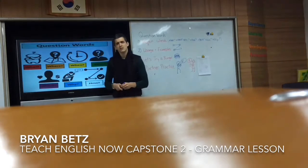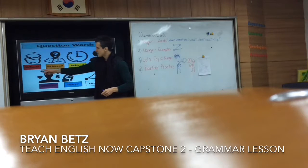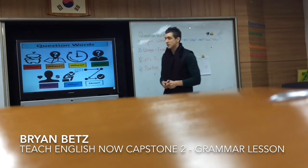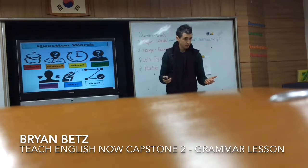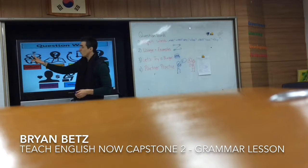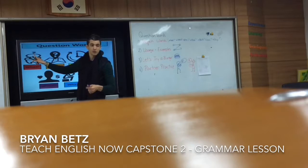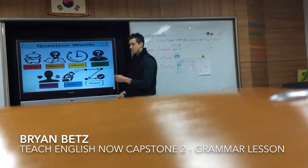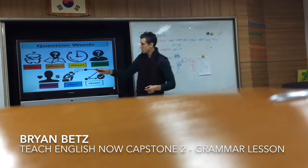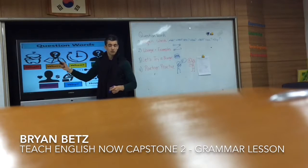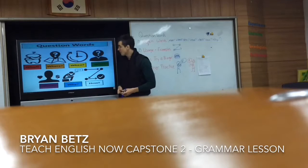Now let's look at these a little bit more. The 'what' question asks about things. What is your favorite food? Pizza, chicken, burgers, ice cream. 'What' asks about things. 'Where' asks about places — you can see this map. 'Where' asks about places.